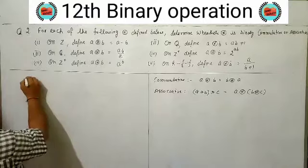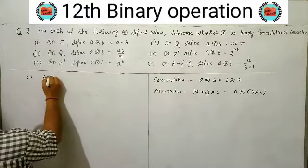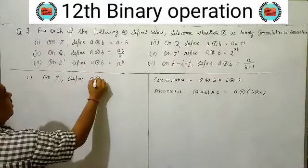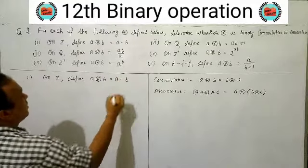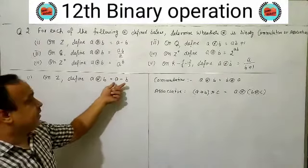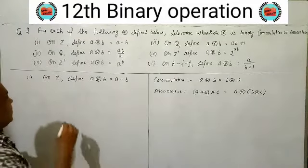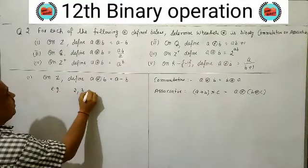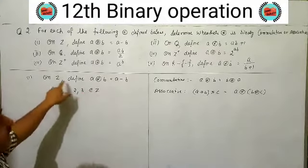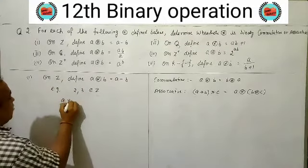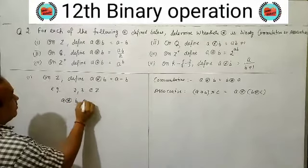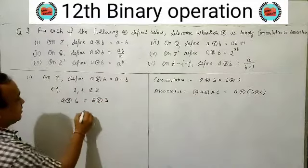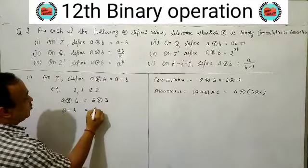We start with the first question. It is defined on Z (integers): a★b = a minus b, i.e., subtraction. We will check this through an example. Let 2 and 3 belong to Z. So a★b means 2★3, i.e., first minus second: 2 minus 3.